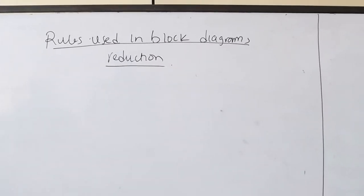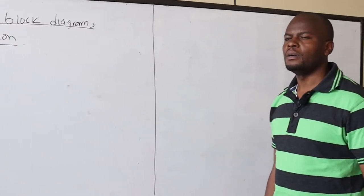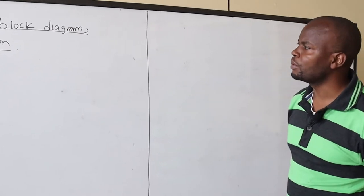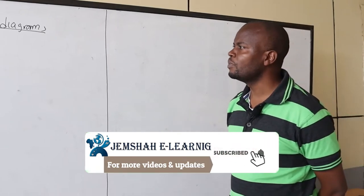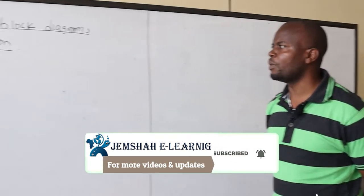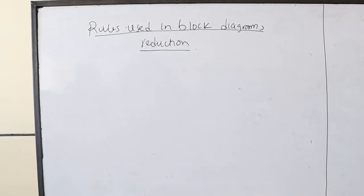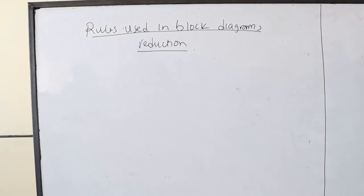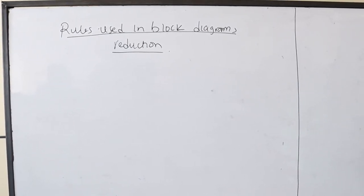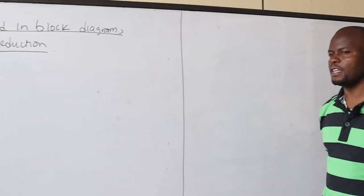After looking at block diagram representation and the ratios we are supposed to obtain in order to analyze a system, we are going to look at rules used in block diagram reduction. We usually have to reduce the block diagrams to canonical form — a block diagram that has only one forward element and one feedback element — in order to obtain its overall transfer function, that is the closed-loop transfer function.